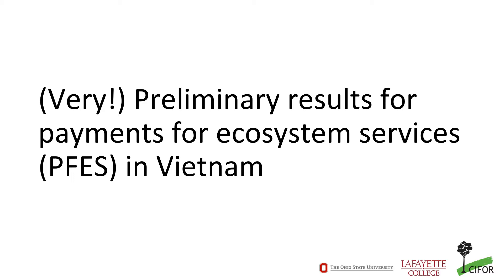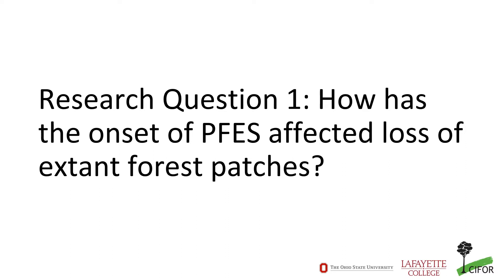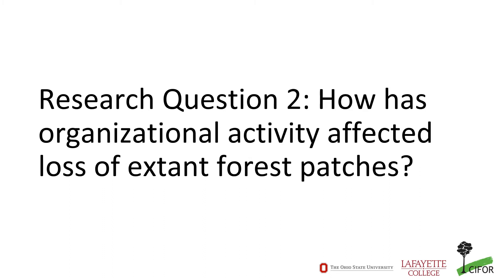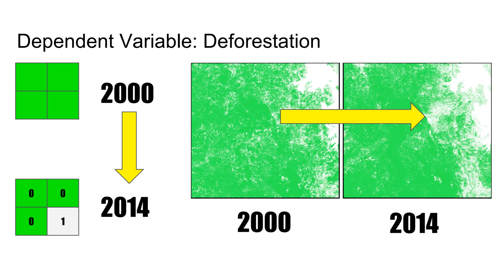As in the case with Matt's part of the presentation, these are very preliminary results. We're looking at PFAS in Vietnam and its potential effectiveness on, first, slowing the loss of extant forest patches, and second, looking at how organizational activity in different provinces has affected loss of extant forest patches. In both cases, we're trying to explain deforestation of an individual 30-meter by 30-meter patch of forest, using the Global Forest Watch dataset.